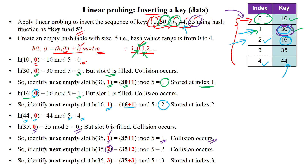We increase the probe sequence to 2. With probe sequence 2, we get index 2, but that is also filled. Collision again, so we increase to probe sequence 3. Calculating 35 + 3 mod 5, we get index 3, which is free. We store 35 at index 3. This is the way to insert data using linear probing.